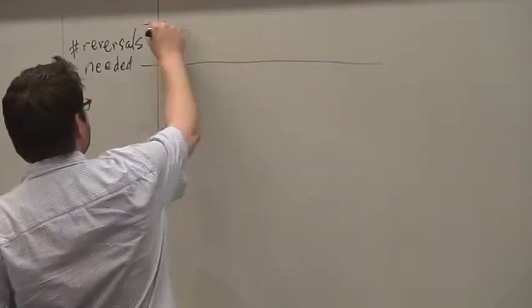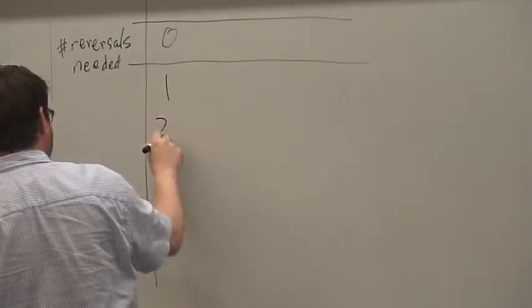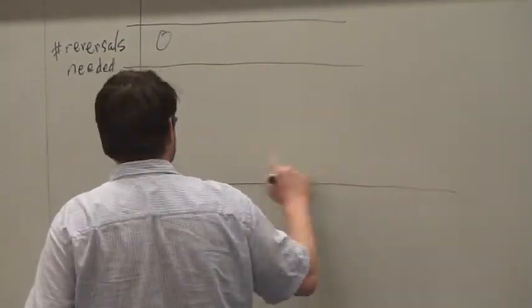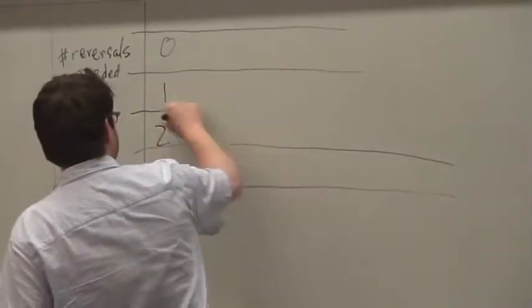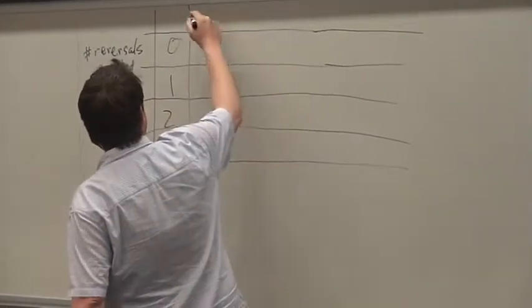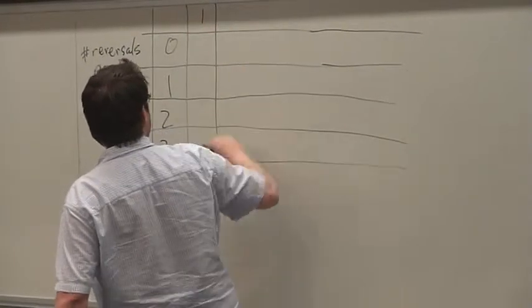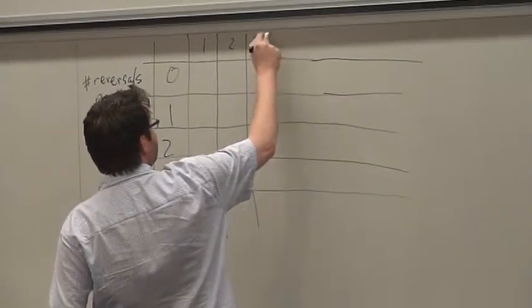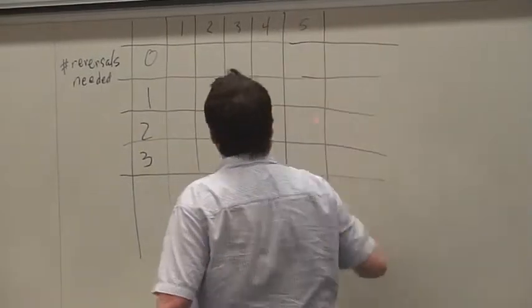So I'll make a small chart. Let's do zero, one reversal, two reversals, three reversals. And let's look at the permutations of each length and ask how many there are. So, length one, two, three, four, and let's go to length five.